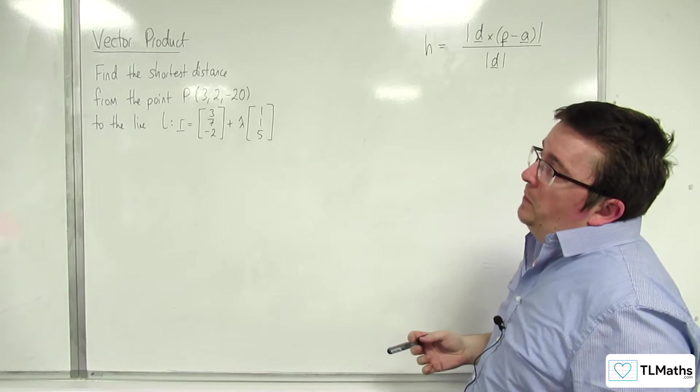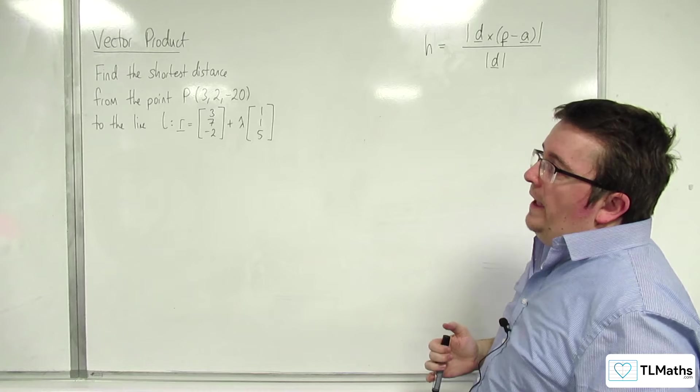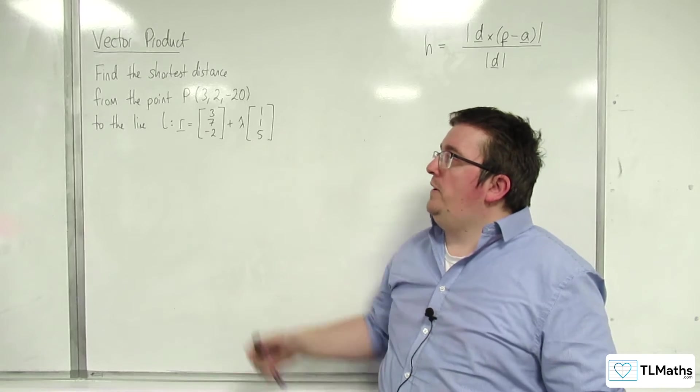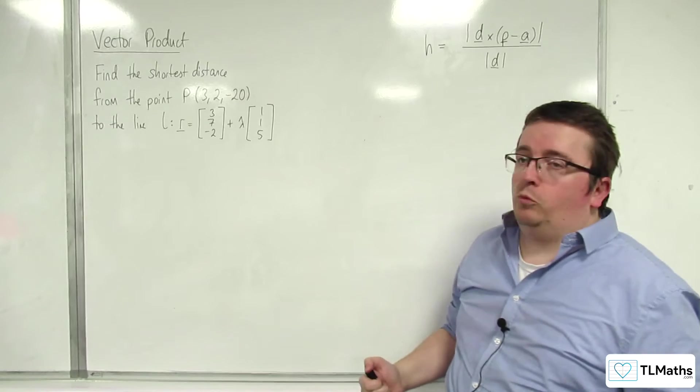Find the shortest distance from the point P(3, 2, -20) to the line L, which is R equals (3, 7, -2) plus lambda times (1, 1, 5).